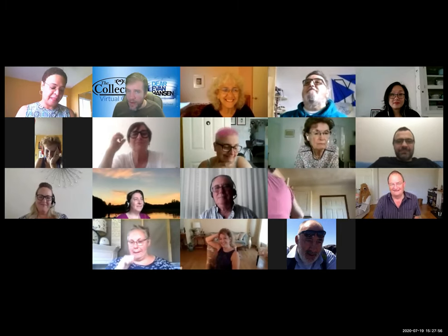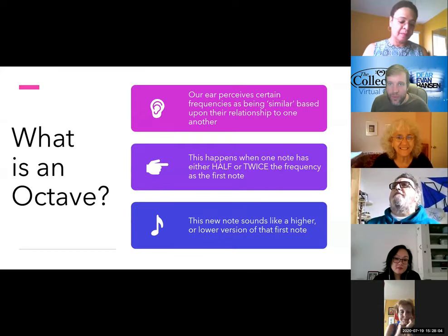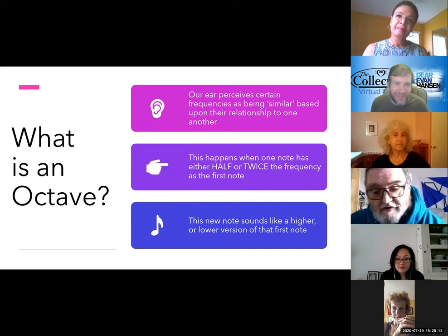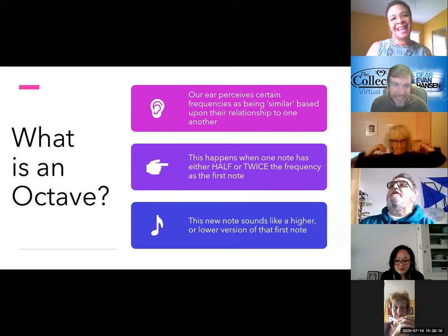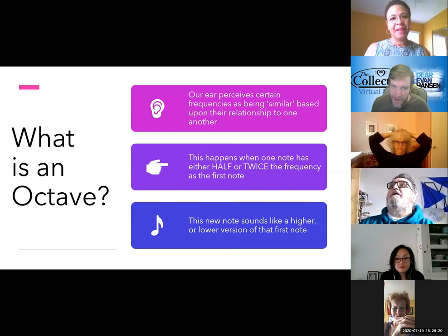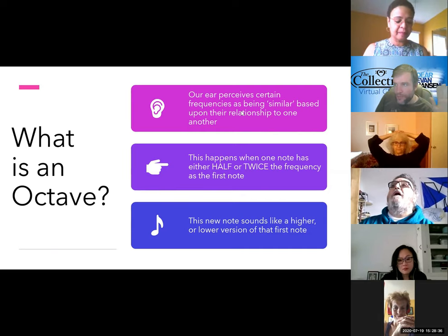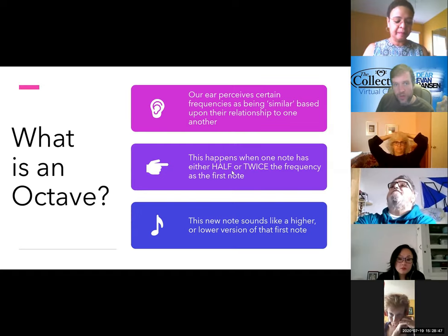Now just moving on from there. That takes us on to the next question — what is an octave? Now, we may well think that we know what an octave is, and an octave is an awful name for it, by the way. The octave is basically from people who invented the heptatonic scale, where you've got seven notes of a scale and the eighth is the octave. Our ear perceives certain frequencies as being similar based upon their relationship to one another — this happens when one note has either half or twice the frequency as the original note.